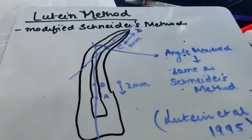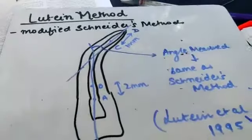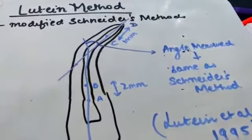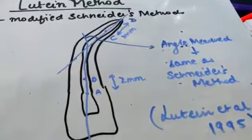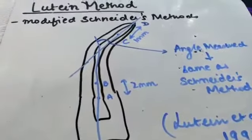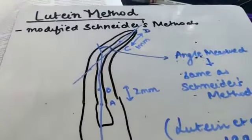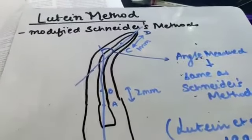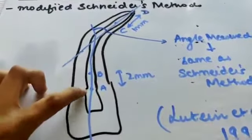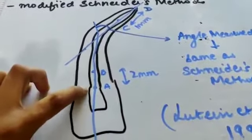This next method is basically a modification of Schneider's method. In the case of Schneider's method, three points were taken: one at the apical foramen, one at the center of canal orifice, and one point where the canal begins to flare. Here, the first point is again taken as the center of the canal orifice.